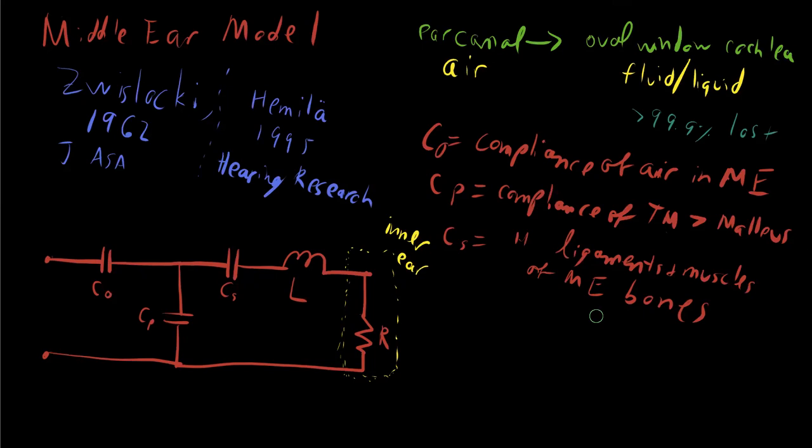And then finally, we have L. And L represents the inductance. It's the inductance of the middle ear bones, which is based on the inertial mass of the middle ear bones. It turns out that any object with mass that's attached to some moving system has inertia.